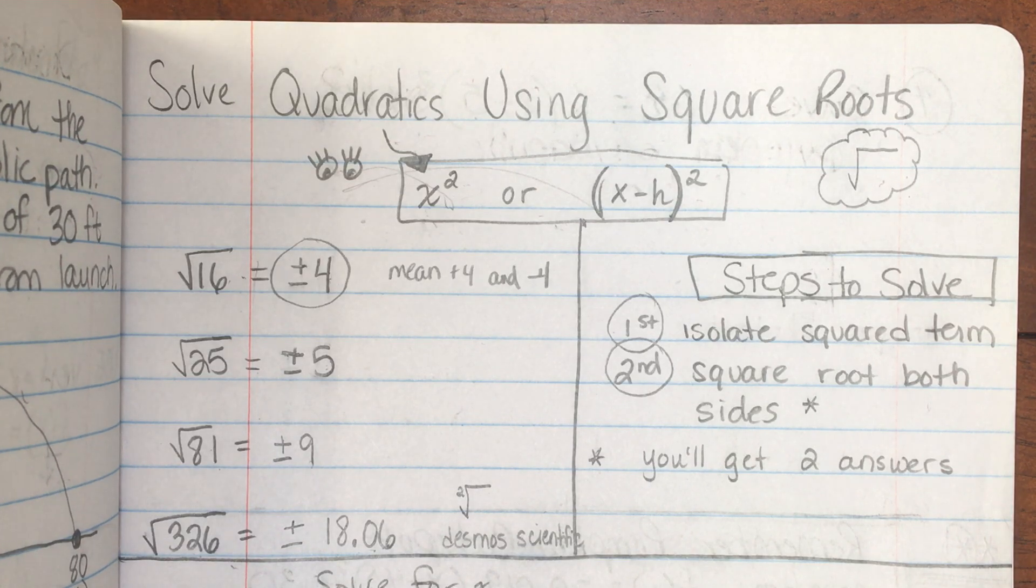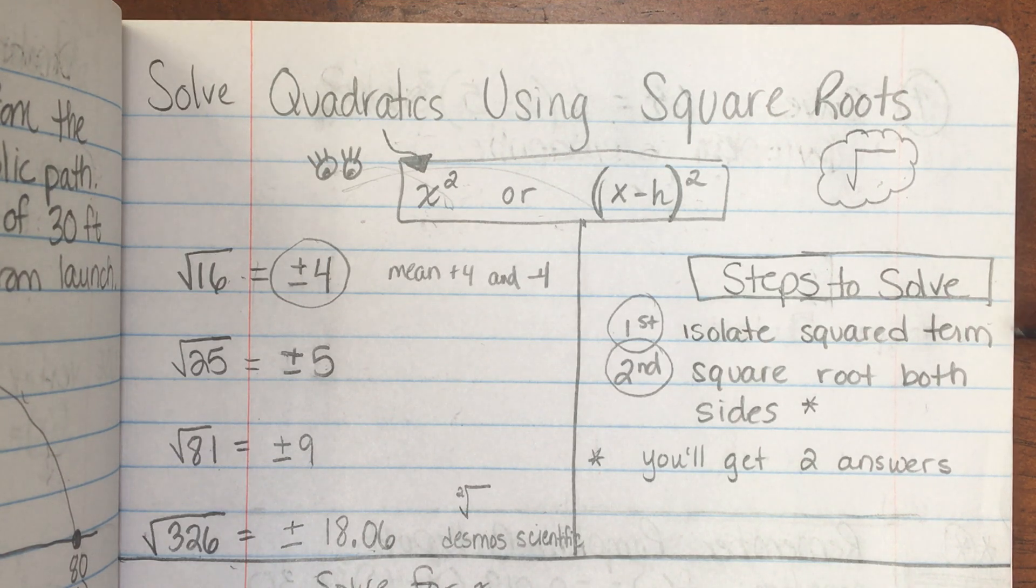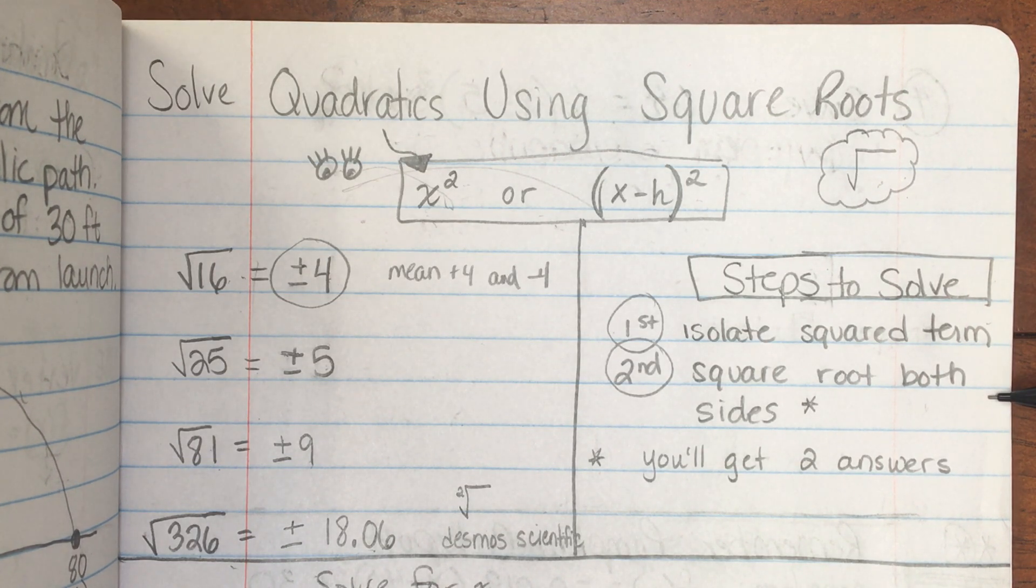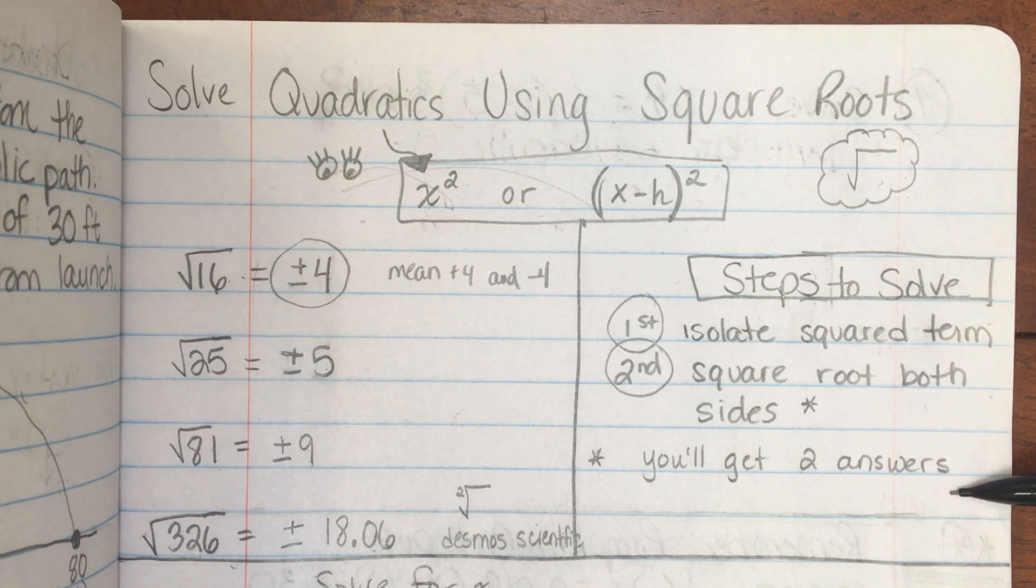You're going to solve some equations now. The steps to solve. First, isolate the squared term. Second, square root both sides to keep everything balanced. And then you'll get two answers.